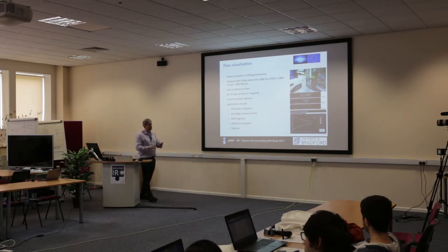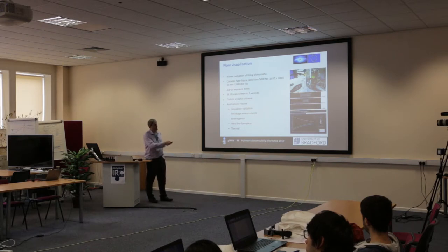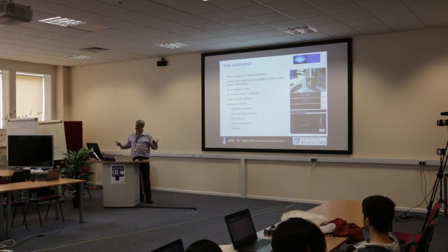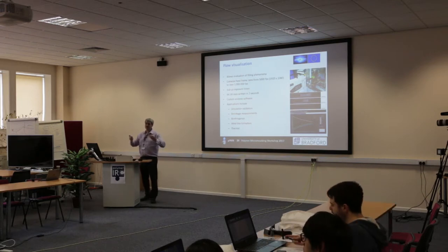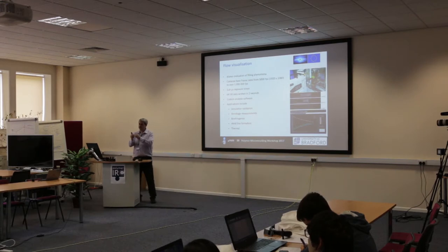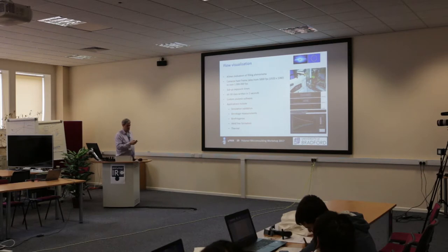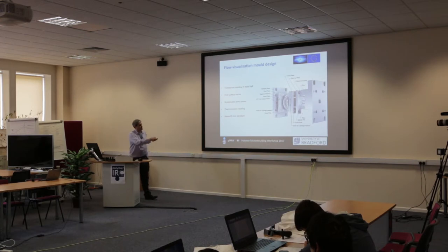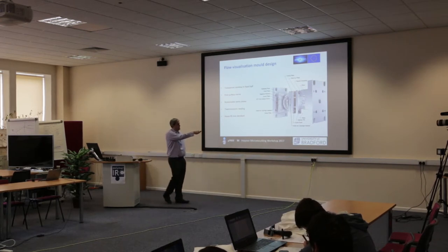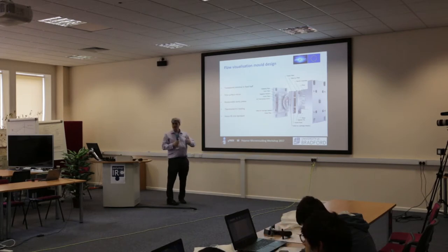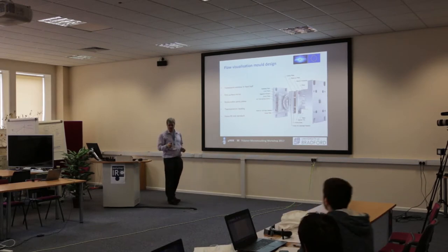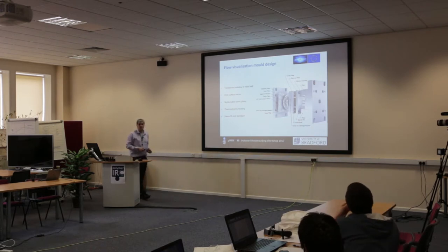A nice example is weld lines — a problem in conventional injection molding that becomes a huge problem in micro injection molding because everything cools so much more quickly, leaving even less time for flow fronts to knit together. We use this imaging system to measure the velocity at which flow fronts come together and calculate the influence on weld line strength. The mold design is simple: two cavity plates forming the cavity with a sapphire window and a 45-degree mirror behind it, allowing us to view from the side directly with the camera.